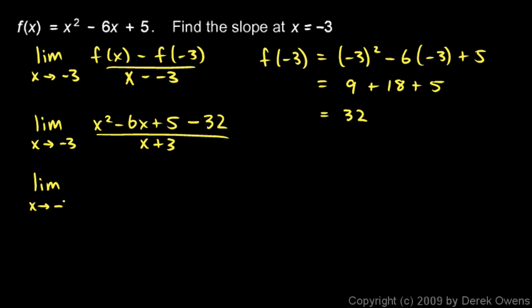So this will be the limit as x approaches negative 3. And let's just consolidate those two terms. That's easy. x squared minus 6x minus 27 over x plus 3. And this is going to factor and simplify.